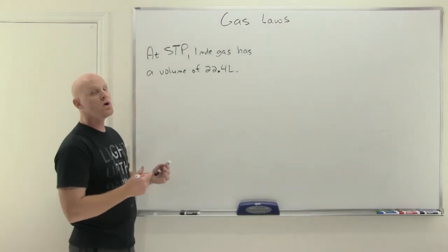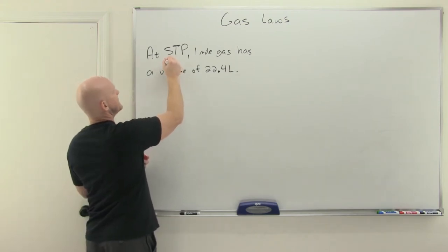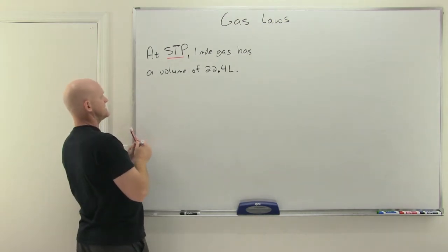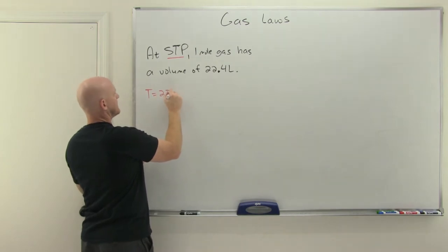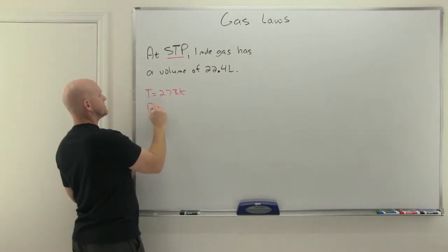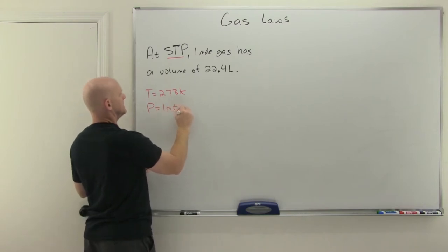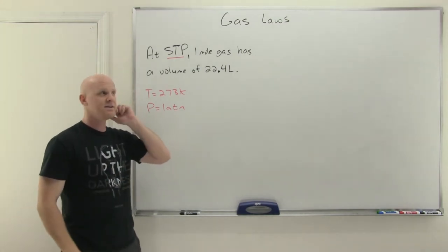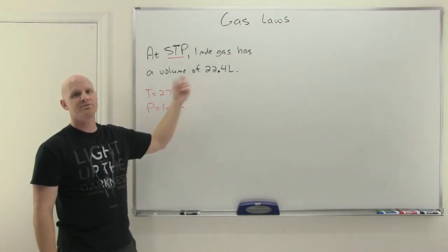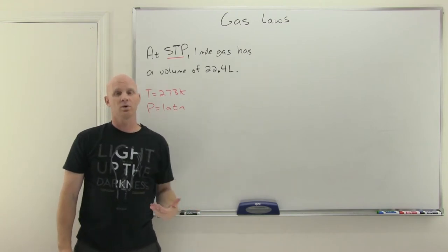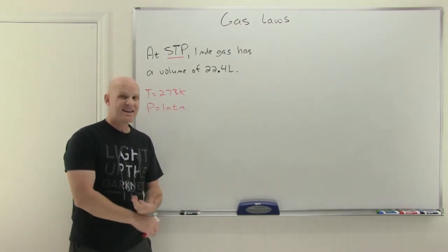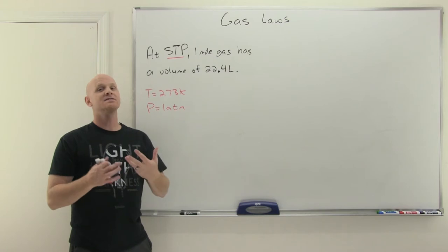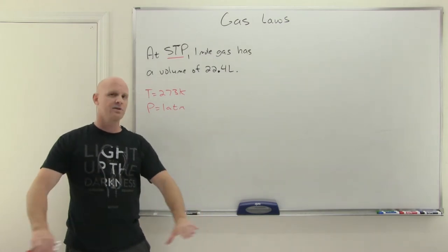Now let's talk about the volume of one mole of gas under conditions we define as STP, which stands for standard temperature and pressure. The standard temperature is 273 Kelvin — zero degrees Celsius — and the standard pressure is 1 atmosphere. Under these conditions, the volume of one mole of any ideally behaving gas is going to be 22.4 liters. It doesn't matter if that's one mole of N2, CO2, or argon — the identity of the gas doesn't matter because most of any ideal gas is made up of empty space and the molecules themselves have negligible volume.